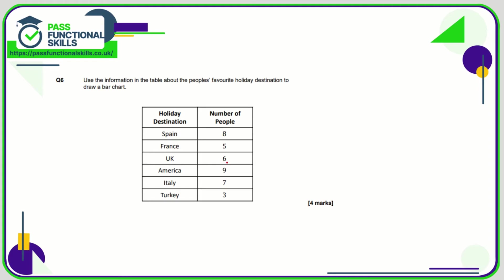Question number six. Very similar. We want number of people up the side, that axis clearly labeled. Across the bottom we want holiday destination clearly labeled: Spain, France, UK, America, Italy, Turkey. I would write it in full rather than abbreviations. We're going up to nine so I'd take my scale up to ten, making sure I start at zero. Going up in ones would be appropriate, no point going up in halves.